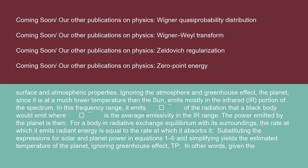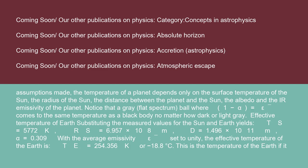Ignoring the greenhouse effect, the temperature of a planet depends only on the surface temperature of the Sun, the radius of the Sun, the distance between the planet and the Sun, the albedo, and the IR emissivity of the planet. Notice that a gray, flat-spectrum ball where (1 − α) = ε comes to the same temperature as a black body no matter how dark or light gray.